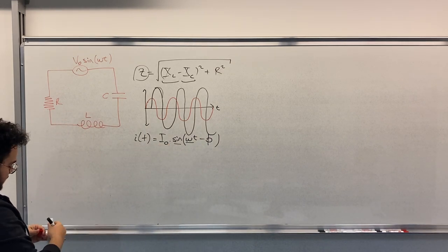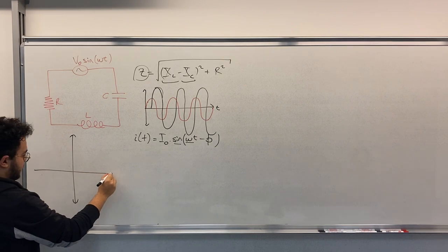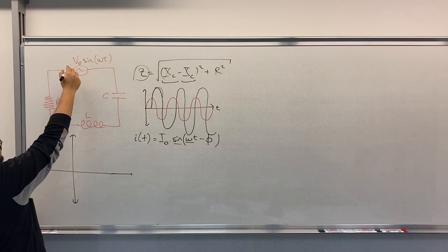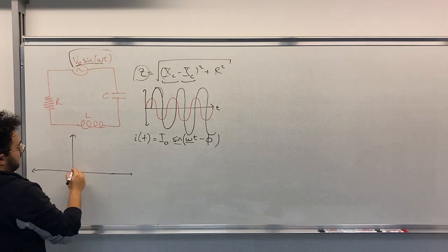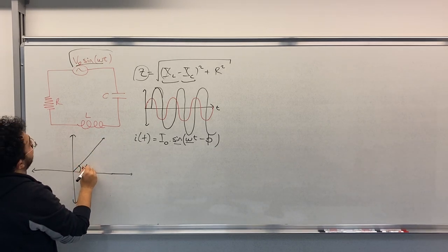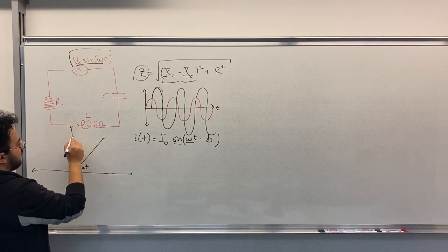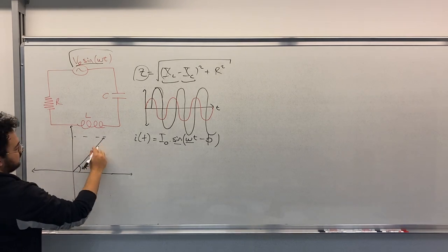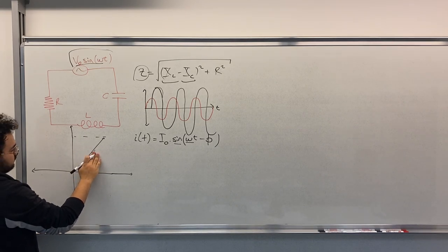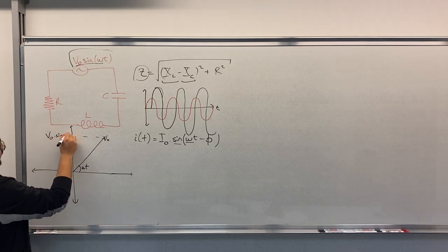So let's check the phase geometrically. We have here the magnitude of V0, we have here V0 times sin omega t.